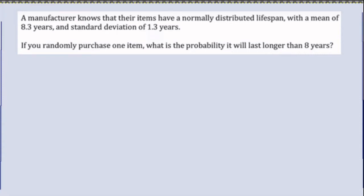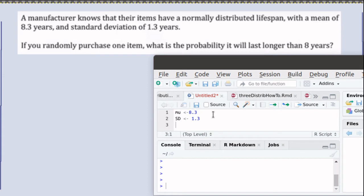In this problem we're attempting to find the probability associated with a value in a normal distribution. The mean of the distribution is 8.3 and the standard deviation is 1.3.